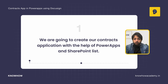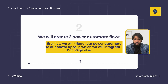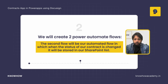In this video we are going to create our contracts application with the help of Power Apps and a SharePoint list. We will also create two Power Automate flows. In the first flow we will trigger our Power Automate flow from Power Apps with DocuSign integrated. The second will be an automated flow in which when the status of our contract is changed it will be stored in our SharePoint list.